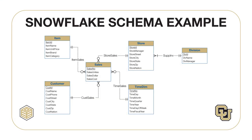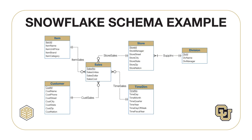A snowflake schema has multiple levels of dimension entity types related to one or more fact entity types. In this ERD, the store dimension has been split into two entity types — store and division — along with a one-to-many relationship from division to store. You should consider the snowflake schema instead of the star schema for small dimension tables that are not fully normalized. The store table in the previously shown star schema is not fully normalized because division ID determines division name and division manager. Since the store table is relatively small, query performance will not suffer much with the need to join the division table in a snowflake design. For large dimension tables such as customer, however, query performance may suffer with the extra join operations required in a snowflake design.